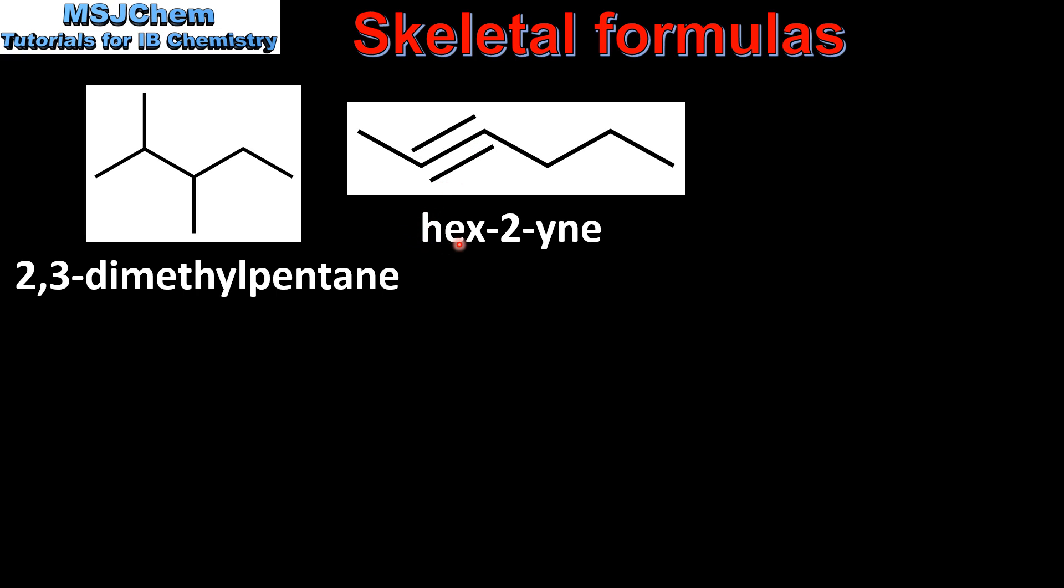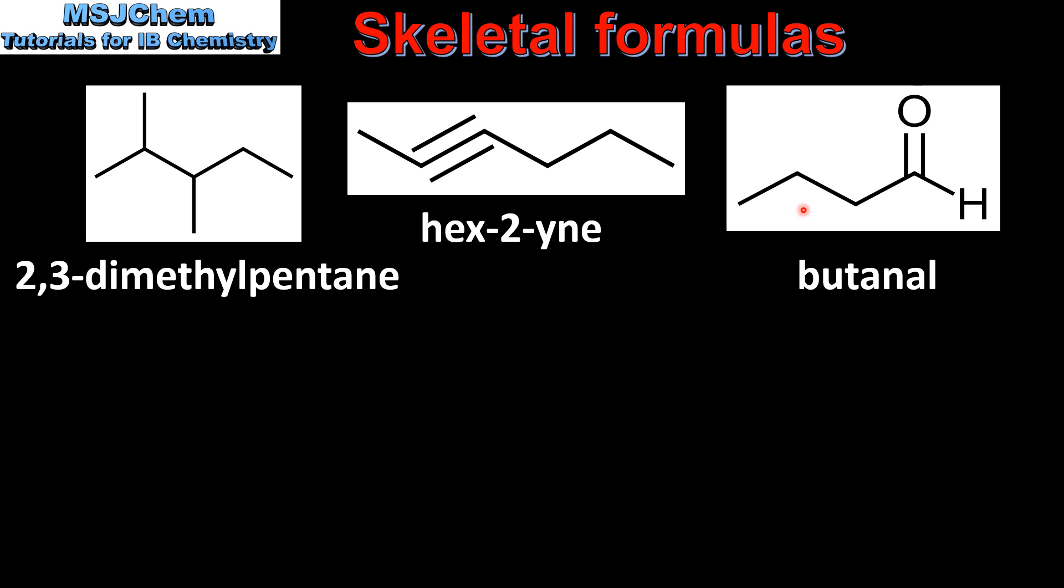Our next example has a carbonyl group which is a carbon double bonded to an oxygen at the end of a molecule, which means it's an aldehyde. The longest continuous carbon chain is four carbon atoms, which makes it butanal.